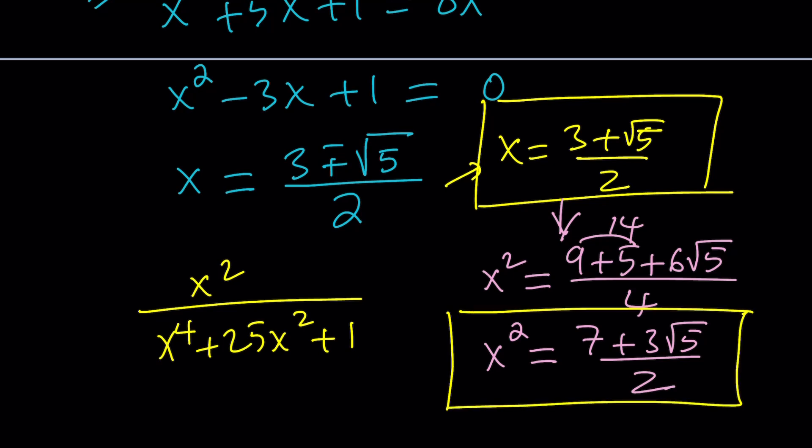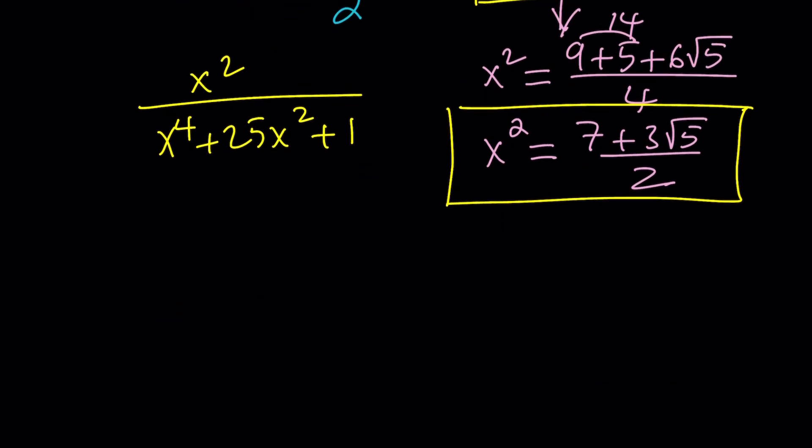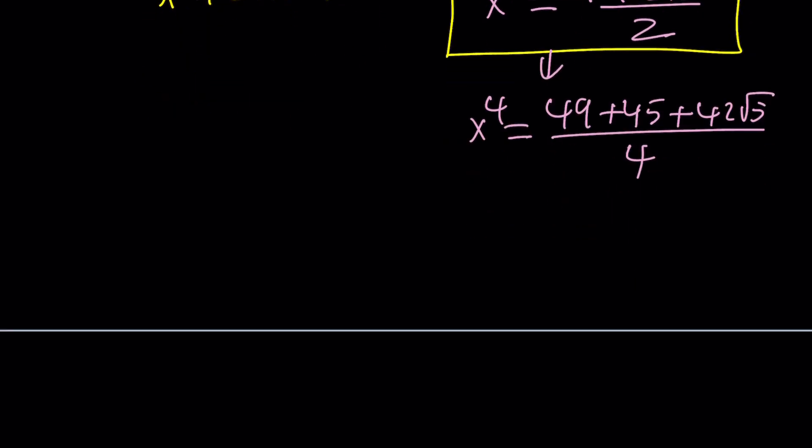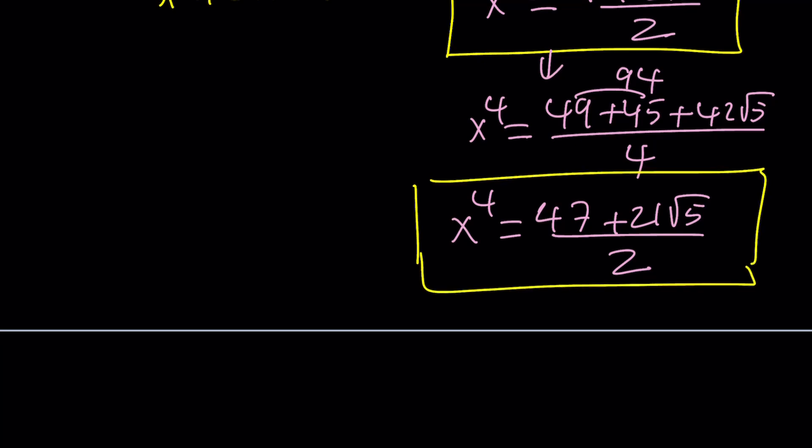We also need x to the 4th power. Let's go ahead and evaluate that as well by squaring this expression. So x to the 4th power is actually going to be 7 squared plus 3 root 5 squared, which is 9 times 5, and that's going to be 45, plus from 2ab we're going to get 21 times 2, which is 42 root 5, all over 4. We can simplify this. 49 plus 45 is going to be 94. If you divide everything by 2, you're going to get 47 plus 21 root 5 over 2. Both fractions have the same denominator, which is good.